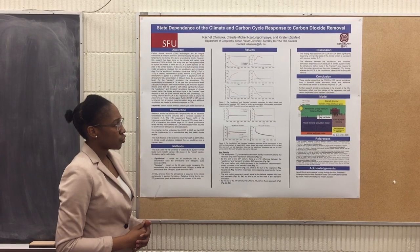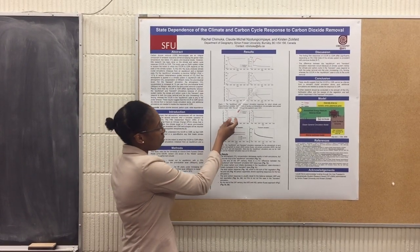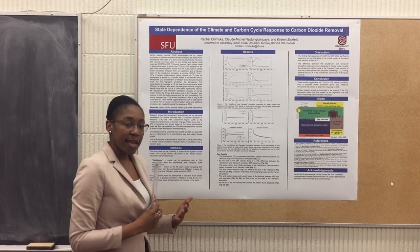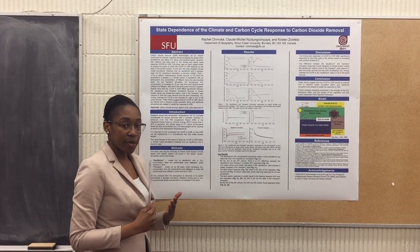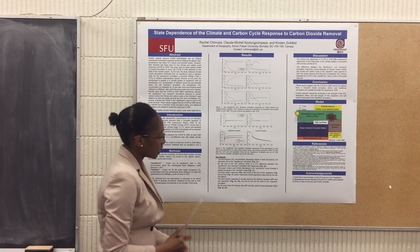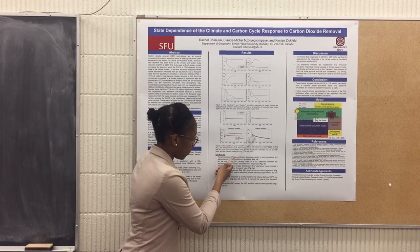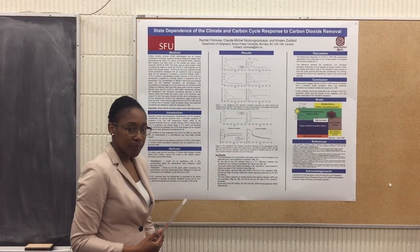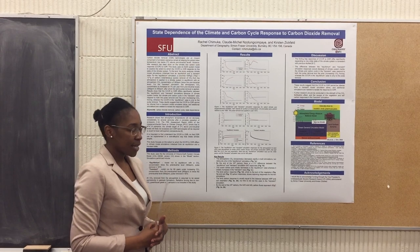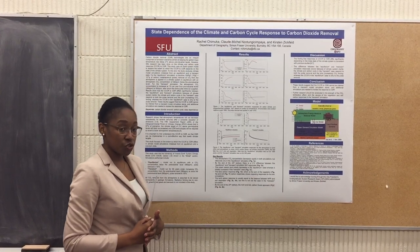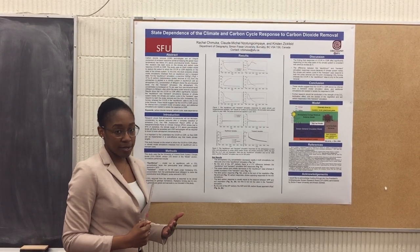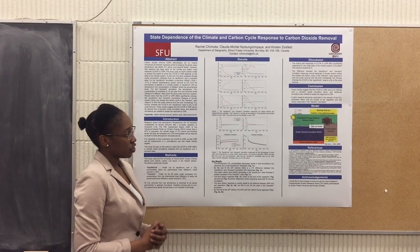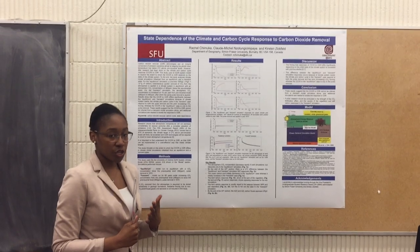Our findings also show that the land carbon response in the transient simulation is not what we would have expected. The land carbon response can generally be calculated by subtracting soil respiration from net primary productivity. However, in our study this is not the case. This discrepancy may be due to a lag in carbon transfer from the leaf litter to the soil, though further research will be required in order to confirm this.